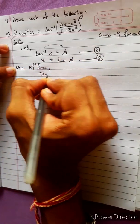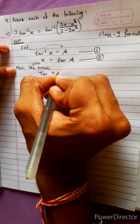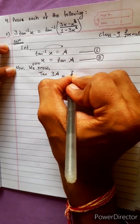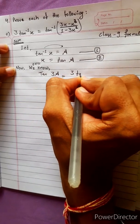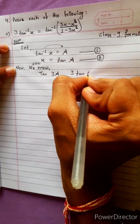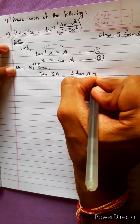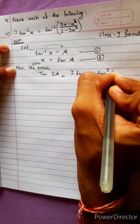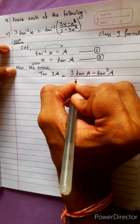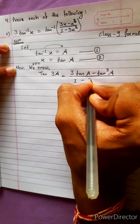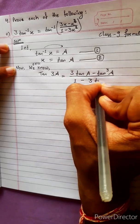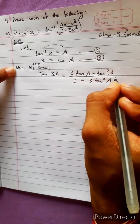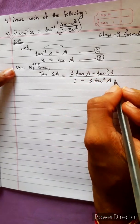tan(3a) equals 3·tan(a) minus tan³(a), upon 1 minus 3·tan²(a). This formula.